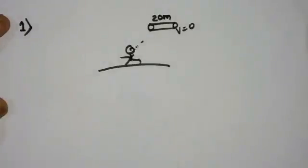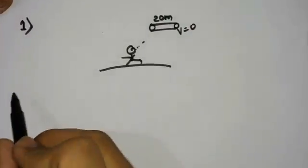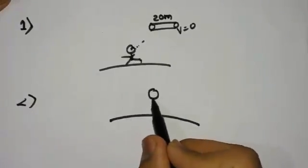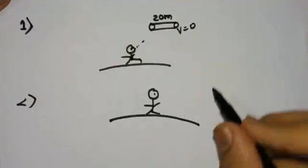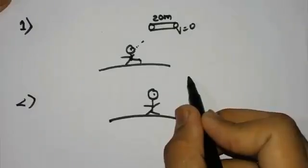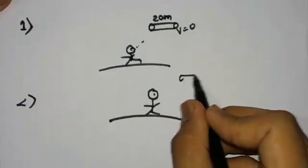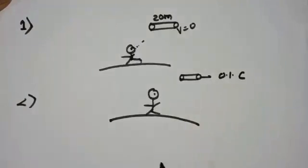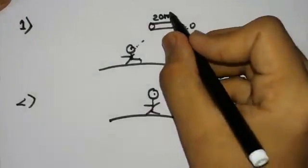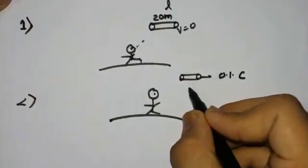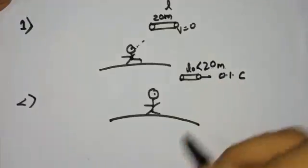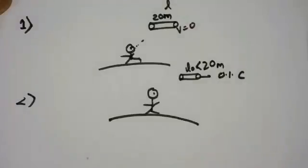Now what happens in our second scenario? The rod moves at the velocity of 0.1 times C, that is 10% of the speed of light. Then L equals 20 meters, the length appears to be something which is less than 20 meters. Yes, it's traveling close to the speed of light.